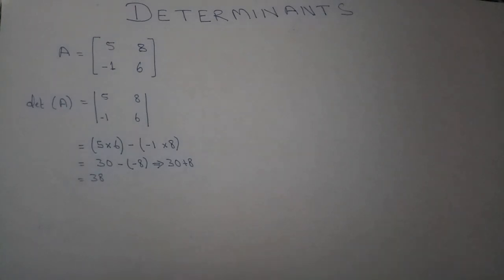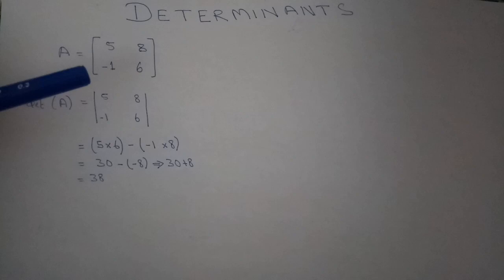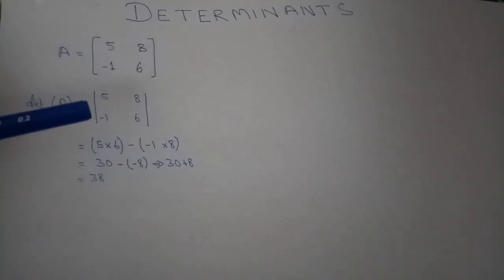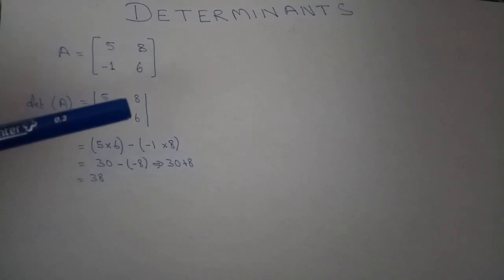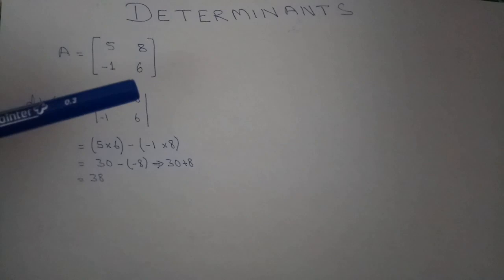Now here is the example. We have a matrix A having the order 2 by 2. It has 2 rows and 2 columns. Now for finding the determinants we will cross multiply the elements.